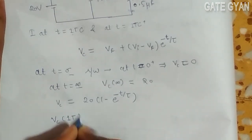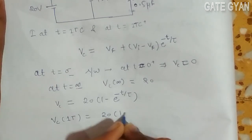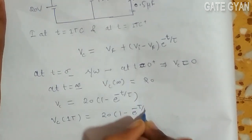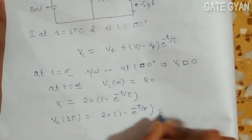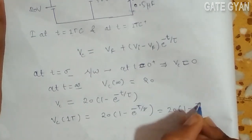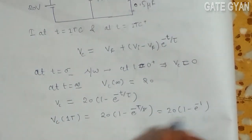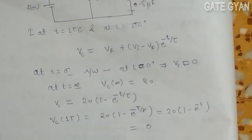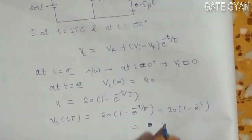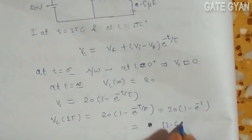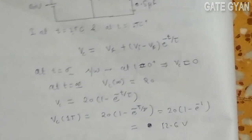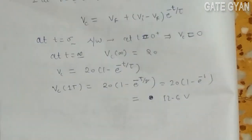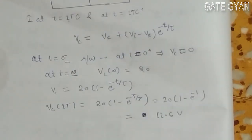At t equals 1 time constant, my vc at 1 time constant will be 20 times (1 minus e to the power minus 1). That will become 20 times (1 minus e to the power minus 1), which is 0.37. So I will get my vc as 12.64 at t equals 1 time constant.